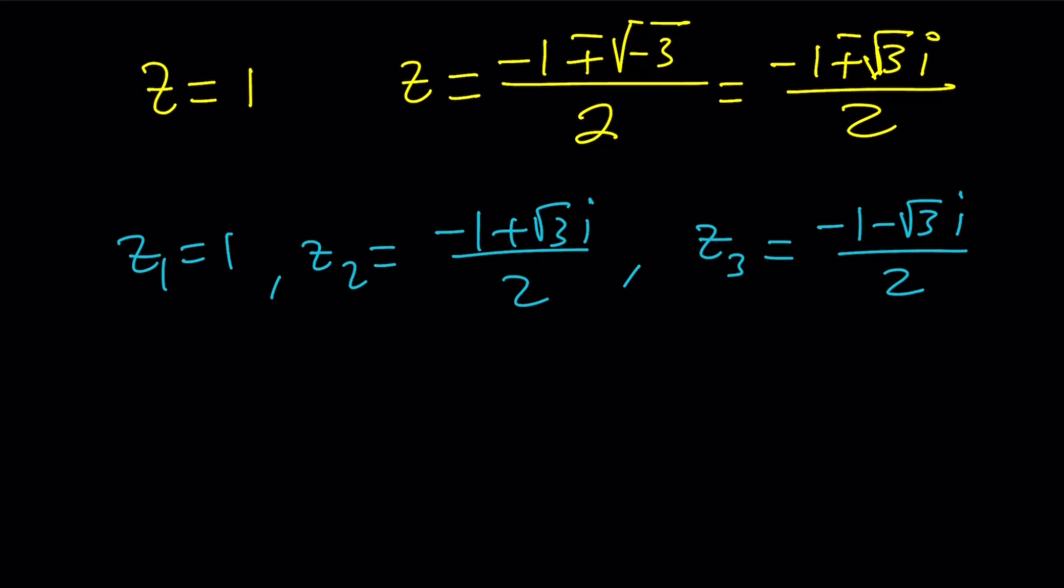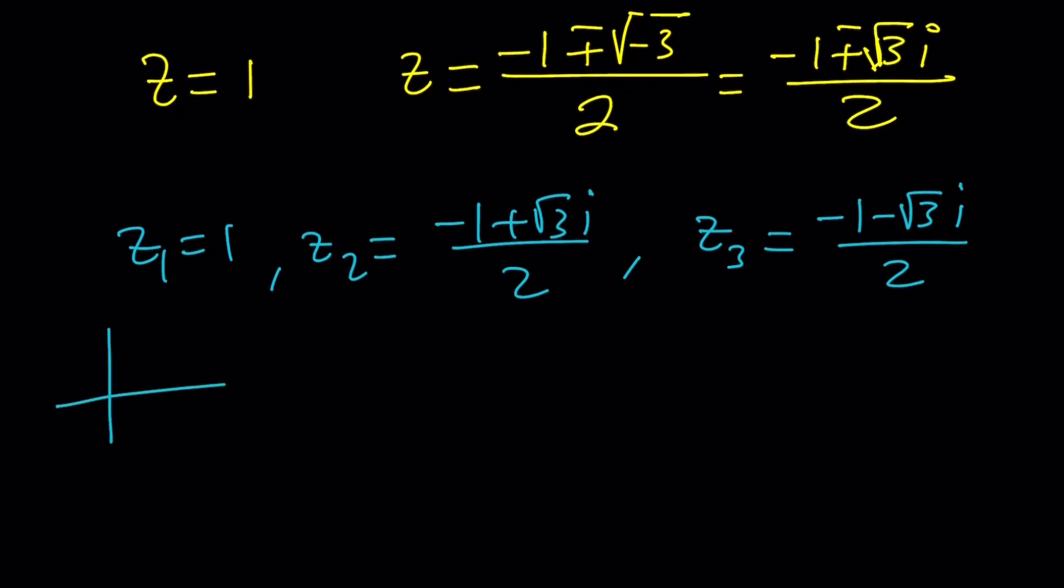Obviously, z sub 1 equals 1 is easy to graph because it's going to be on the real axis, one unit away from 0. So this is the first one. The second one is a little more interesting. We are looking at the point negative 1 half comma root 3 over 2. Since root 3 is going to be greater than 1 in absolute value, our number is going to look somewhat like this. Let's go ahead and use a different color here, connected to the origin.